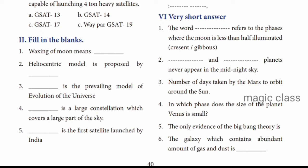Question number 3: Dash is the prevailing model of the evolution of the universe. There are different types of theories about how the universe formed and its origin. The most widely accepted theory is the Big Bang theory. The answer is the Big Bang theory.